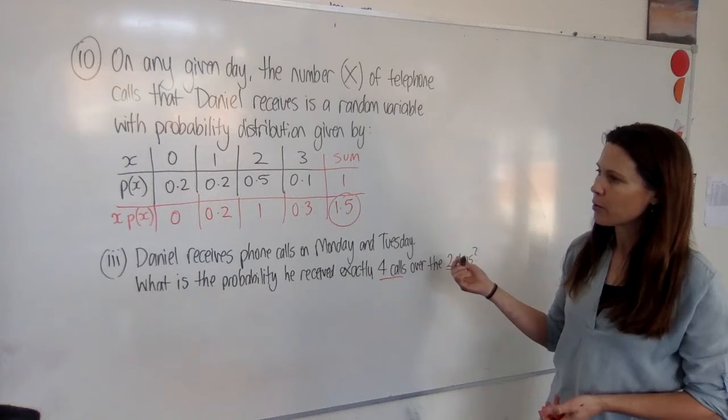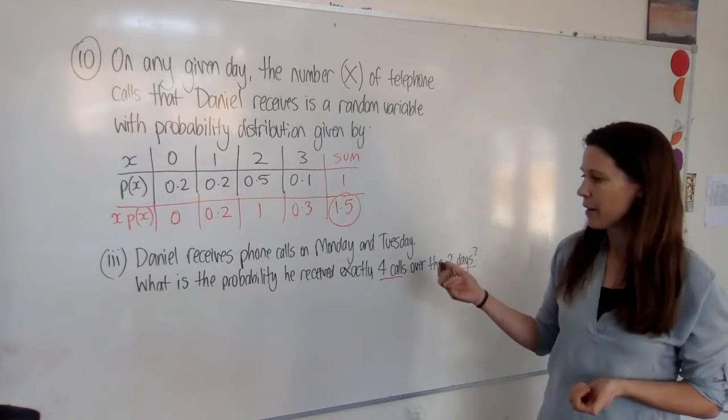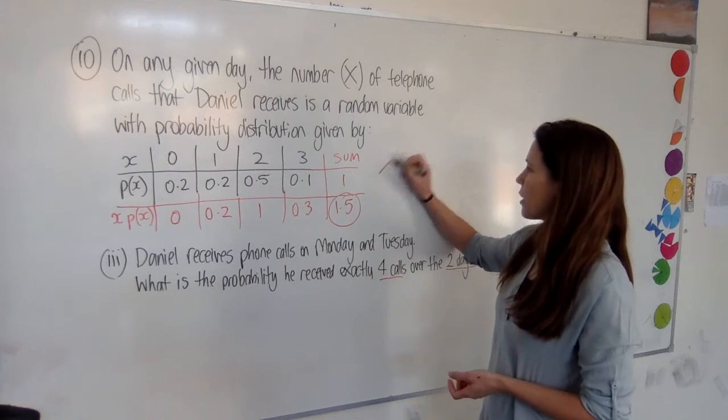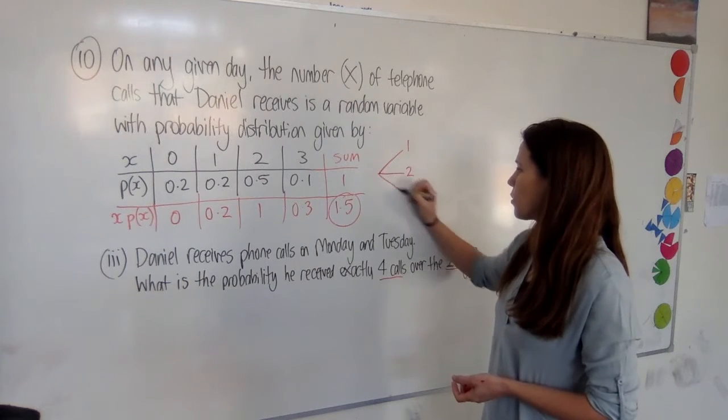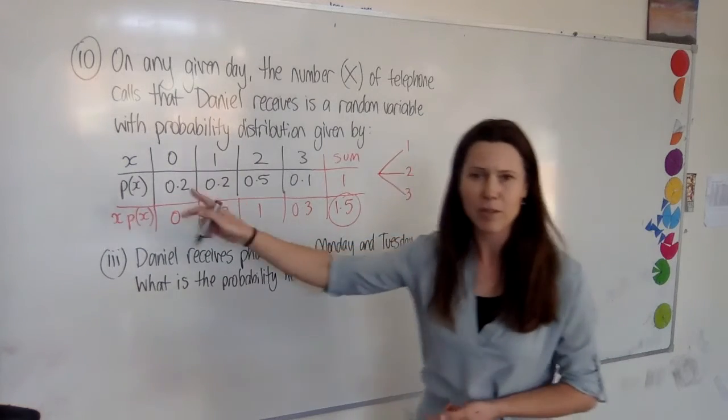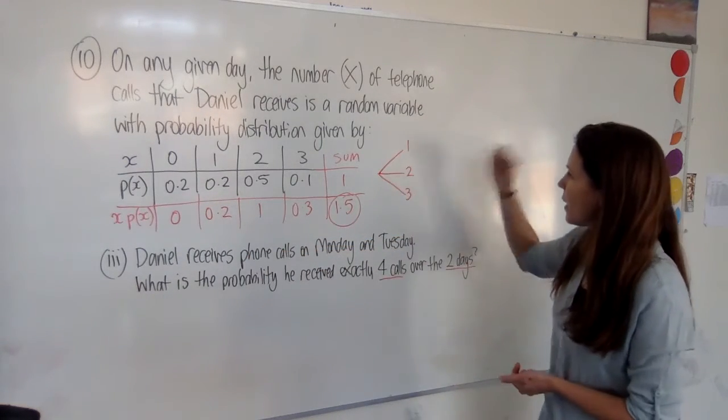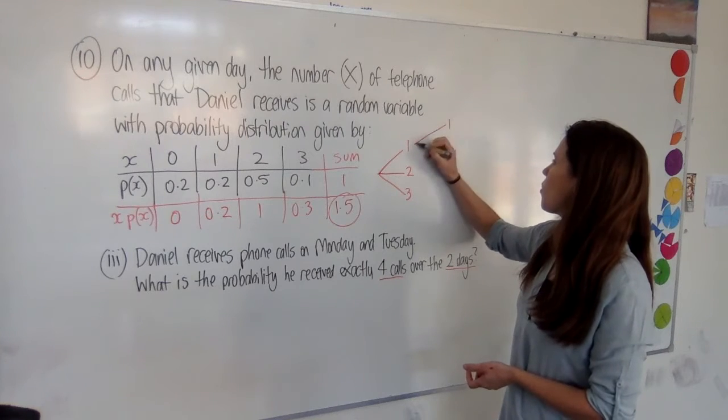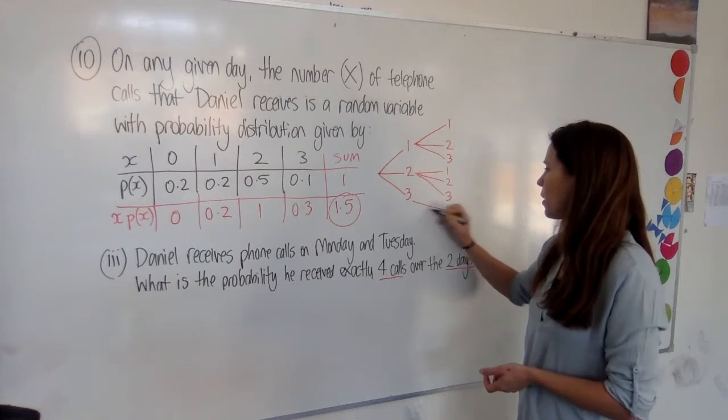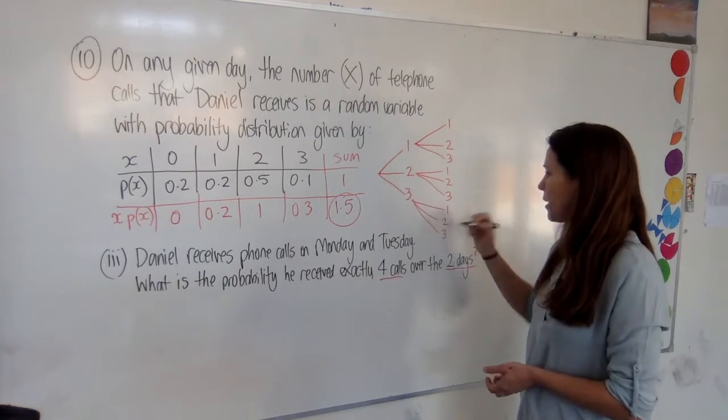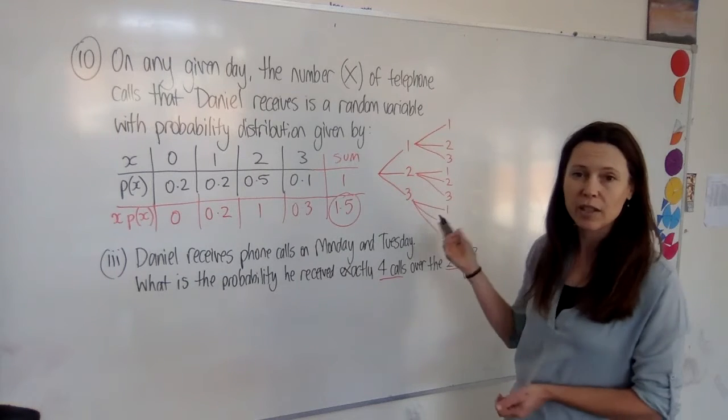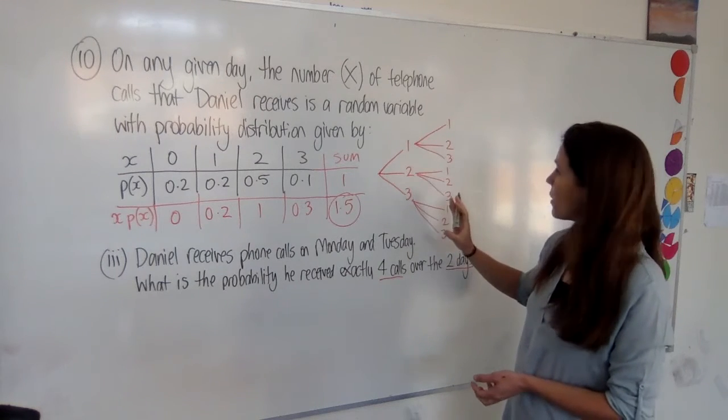Now, first up, you might want to think, well, what are all the things that could happen? Now, if you'd like to draw a tree diagram, you could go ahead and think, well, okay, he could get one call or two calls or three calls. Or zero, of course, but we know that that didn't happen. So you can leave that out of this tree. And then on the next day, you could either have got one or two or three. One, two or three. One, two or three. One, two or three. Now, rather than writing all the probabilities on all of the branches, we could just think about the sections that we're interested in.